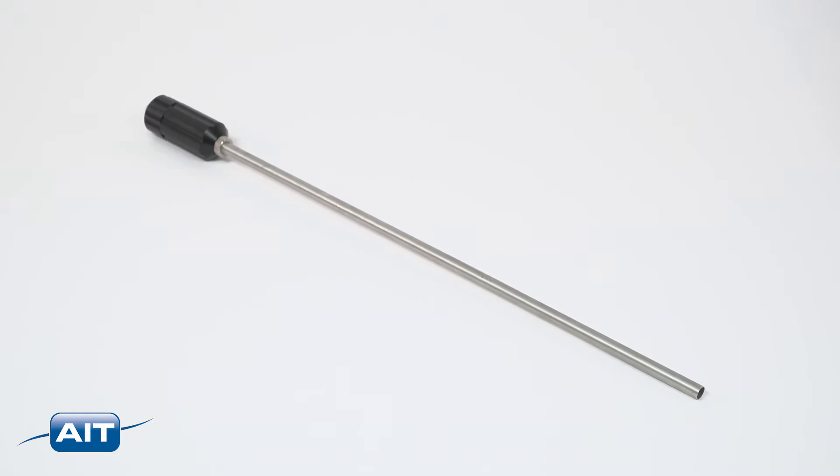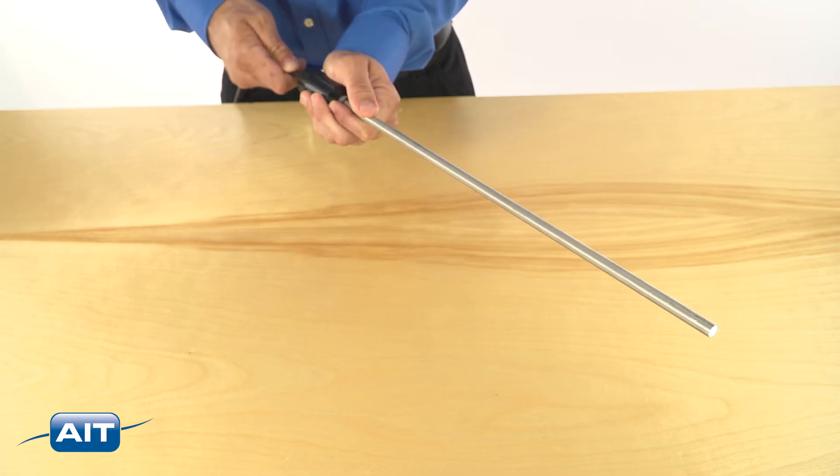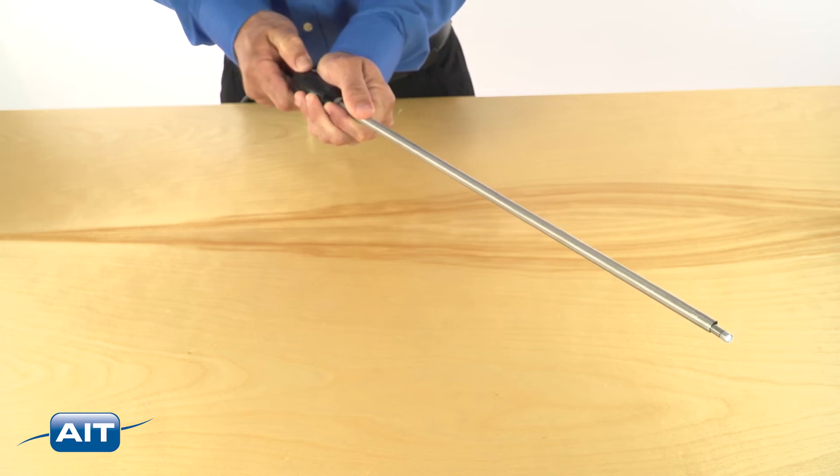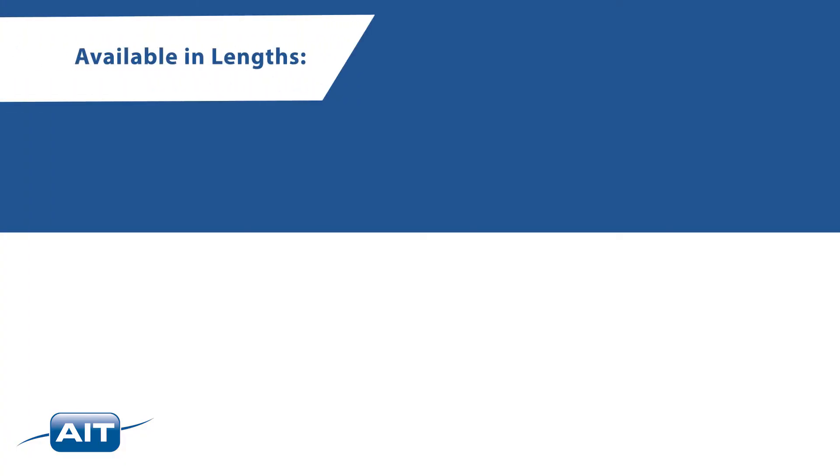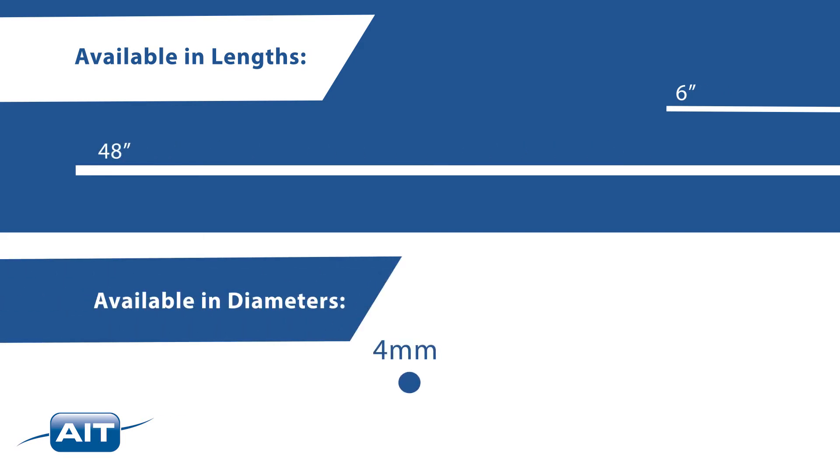Rigidizers assist with directing borescopes to a specific straight direction, commonly used during turbine borescope inspections. Rigidizers are available in lengths of 6 to 48 inches and accommodate borescope diameters of 4, 6.2 and 8.4 mm.